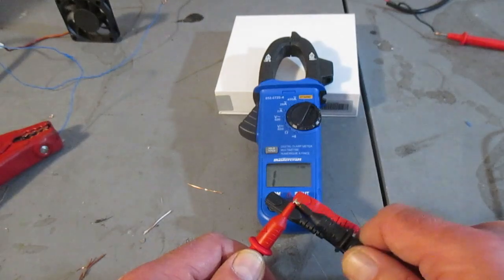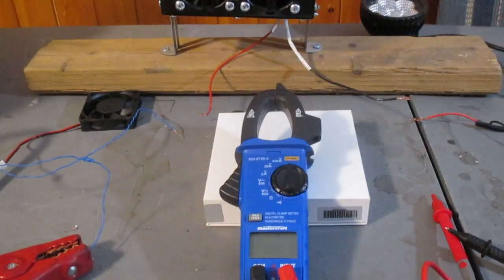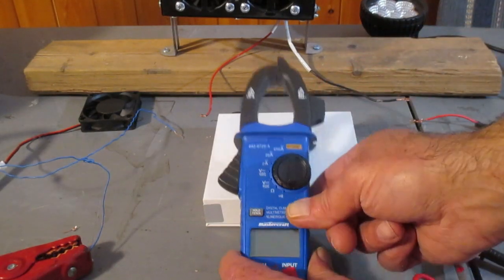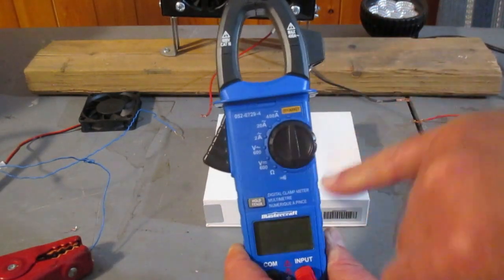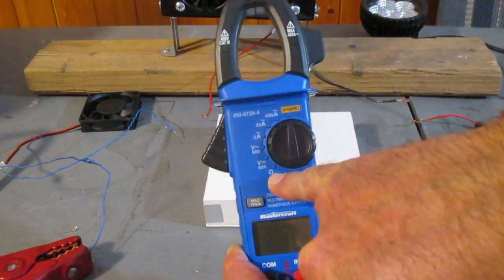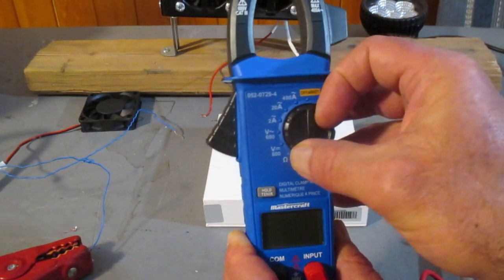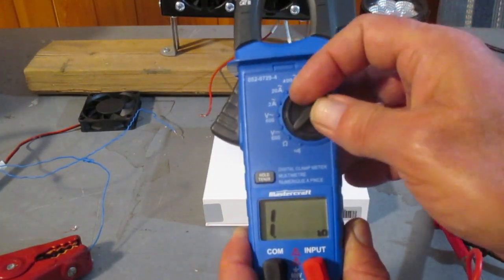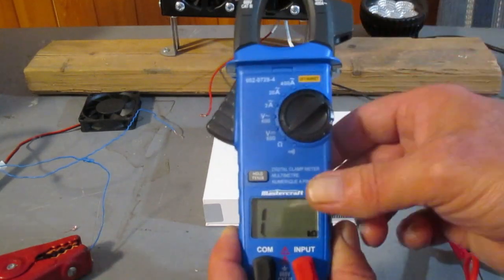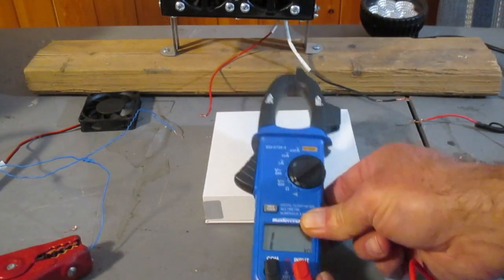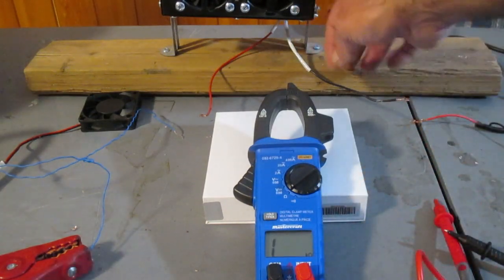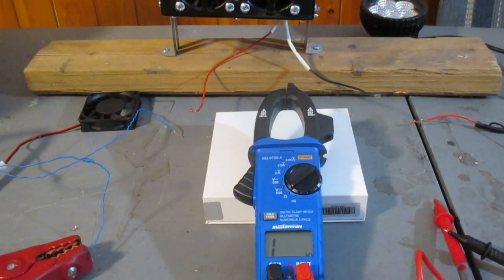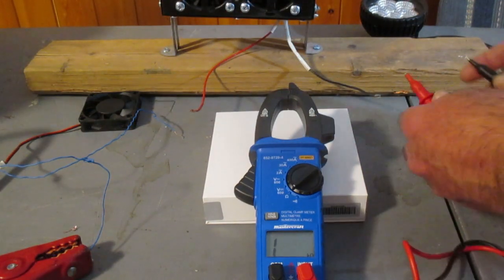To measure resistance with this meter, we put our setting over to the ohms symbol down here. And by the way, never ever take a resistance on something that has voltage applied to it. So I got our little piece of junk heater here. I got that disconnected and let's get a reading off of it.